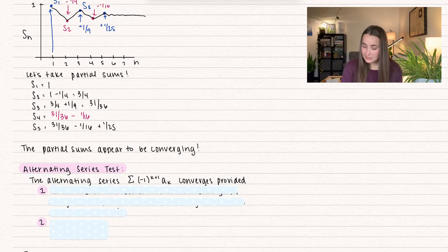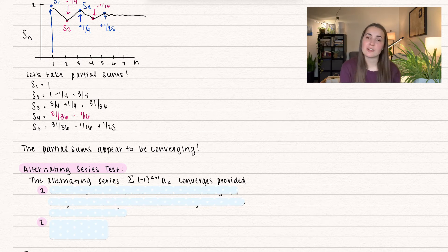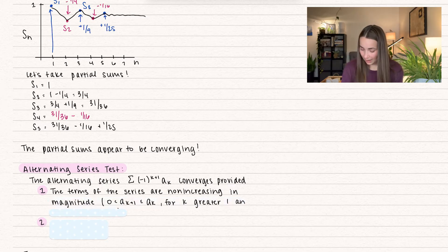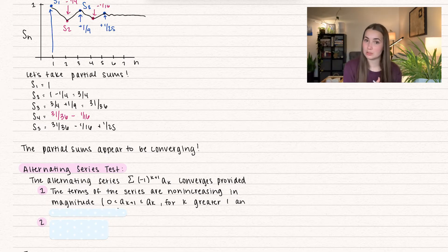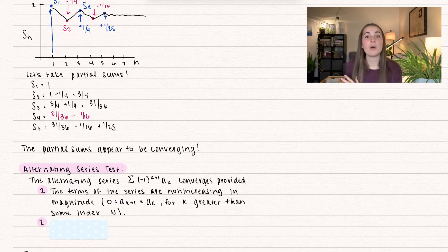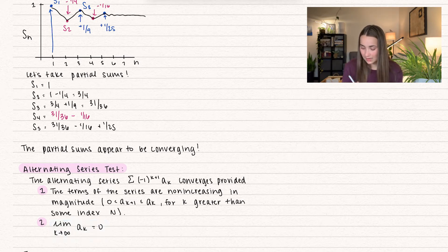Let's talk about the alternating series test. We have a summation with negative 1 to the k plus 1 — or negative 1 to the k — alternating between positive and negative. It converges provided two conditions: first, the terms of the series are non-increasing, meaning a_(k+1) is less than or equal to a_k for k greater than some index. Second, the limit as k approaches infinity of a_k must equal 0.